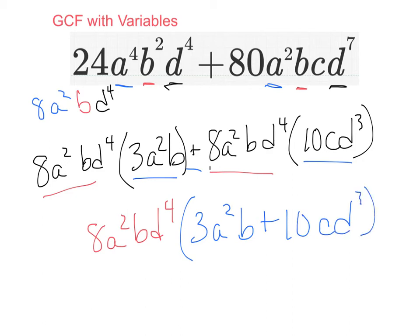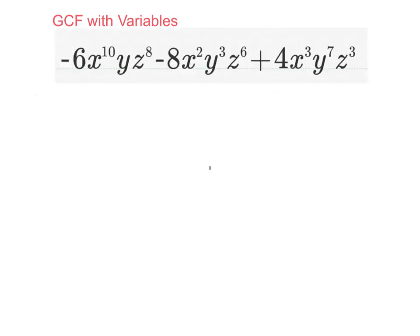Nicely done, now for a tricky one. So factor negative 6x to the 10th yz to the 8th minus 8x squared y cubed z to the 6th plus 4x cubed y to the 7th z to the 3rd. Pause the video and try on your own first.